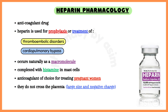Heparin is an anticoagulant drug used for prophylaxis or treatment of thromboembolic disorders and for surgical procedures like cardiopulmonary bypass. Heparin occurs naturally as a macromolecule complexed with histamine in mast cells, where its physiologic role is unknown.